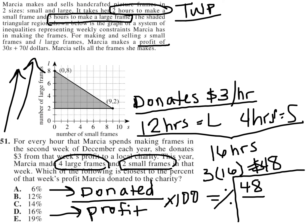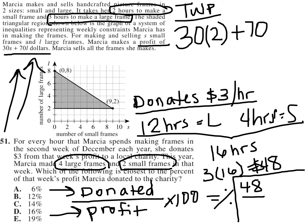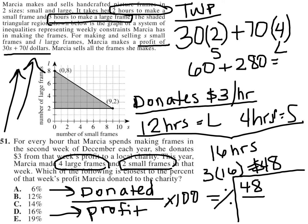Her profit is calculated using the formula 30S plus 70L, where S represents the number of small frames and L represents the number of large frames. She made two small frames and four large frames, so we substitute: 30 times 2 plus 70 times 4. That gives us 60 plus 280, which equals 340.